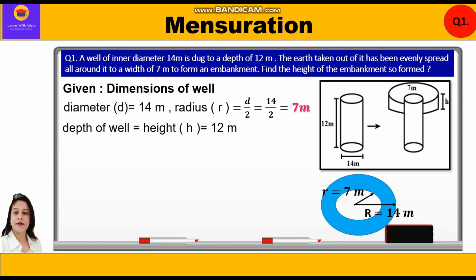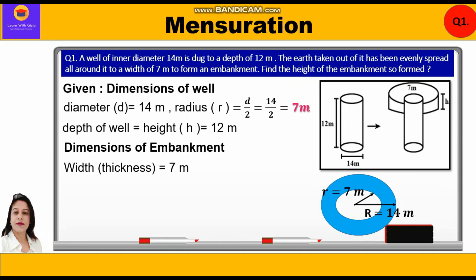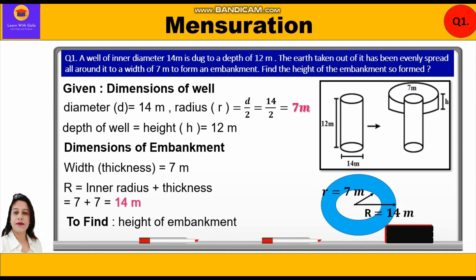The earth taken out has been evenly spread all around to a width of 7 meters to form an embankment. The dimensions of the embankment: the width — that is, the thickness shown in blue in the figure — is 7 meters. The outer radius is inner radius plus thickness: 7 + 7 = 14 meters. We have to find the height of the embankment.